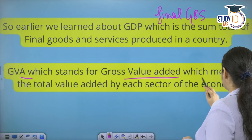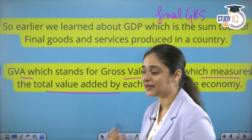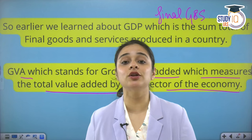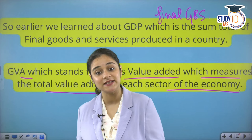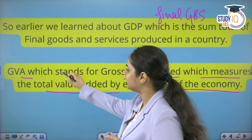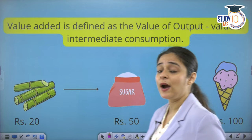Now, what is GVA? GVA stands for Gross Value Added, which measures the total value added by the different sectors of the economy. The primary sector, secondary sector, and tertiary sector — agriculture, manufacturing, and the service sector — each contribute a certain amount of value added in one year. That is what we see in Gross Value Added.